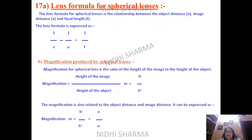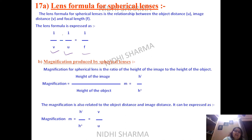Now the lens formula. We again use V, U, and F. The difference from the mirror formula is the sign: the mirror formula is 1/V + 1/U = 1/F, while the lens formula is 1/V − 1/U = 1/F.